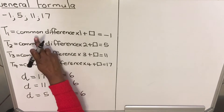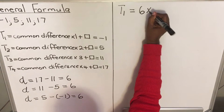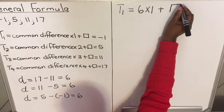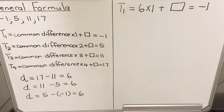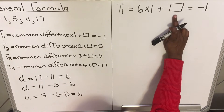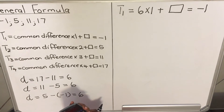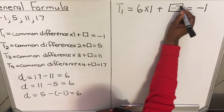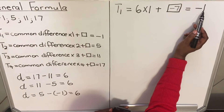Now let's write this using the common difference. Term 1 equals 6 times 1, plus a particular number we need to find, and the total must be minus 1. So 6 times 1 is 6. To get minus 1, we calculate minus 1 minus 6, which gives minus 7. So if we have 6 and add minus 7, we get minus 1.